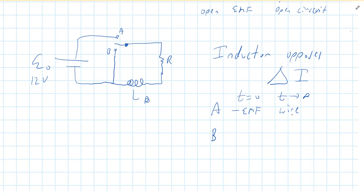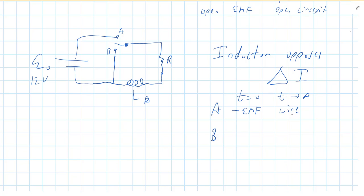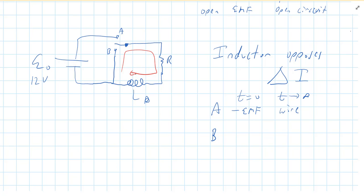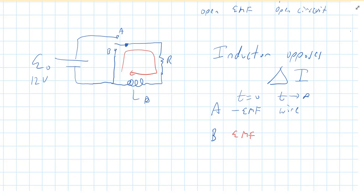Now let's say you get the inductor to steady state with the switch at location A, and then you quickly move the switch from A to B. Now there's no battery anymore. The inductor had current going through it, and it's going to continue to try to keep the current the same — it's going to replace the battery's job and become a positive EMF. But after a long, long time, it's going to behave like what it is, which is just a bunch of wire.